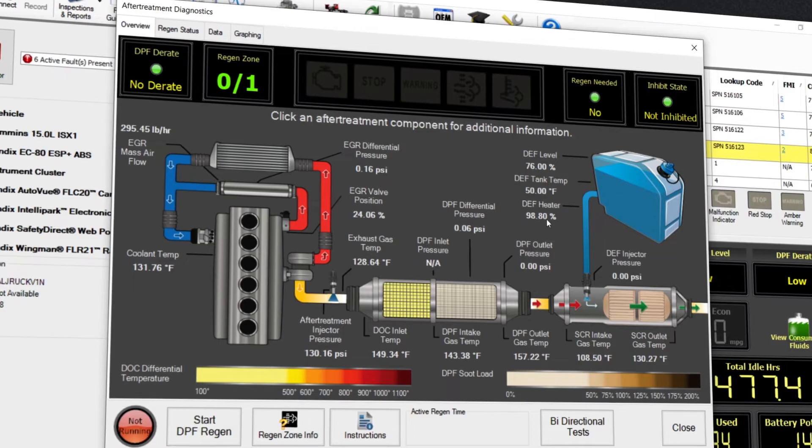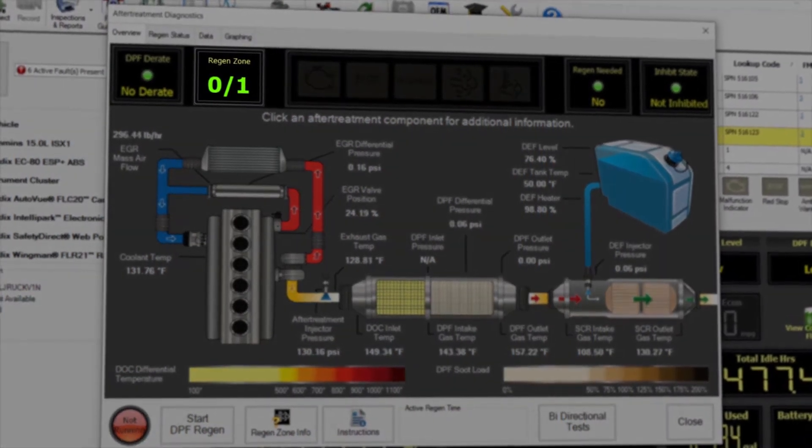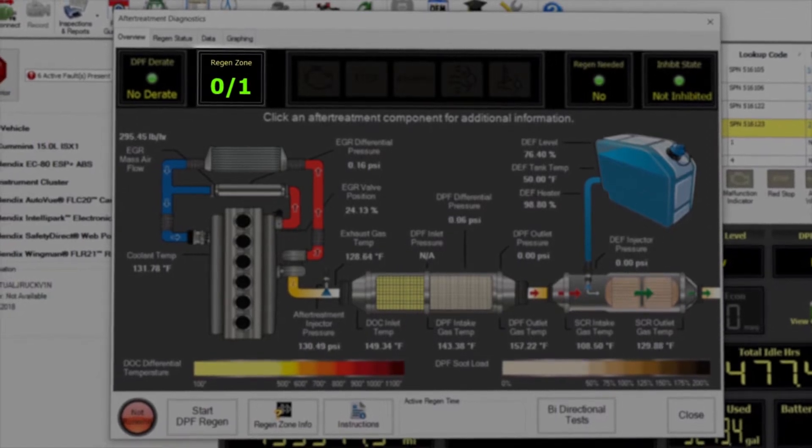In the after treatment diagnostics section of JPRO, you will notice the Regen Zone at the top left of the screen. Regen Zones range from 0 to 5.